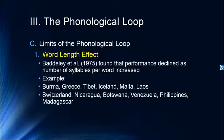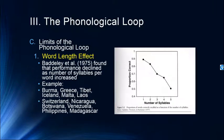Looking at the original research, the proportion correct for items recalled declined pretty dramatically as number of syllables increased. For one-syllable words it's about 90% correct — roughly the same as letters or digits. But when you get to five syllables, performance declines down to 50%. This is a clear indication that the length of the word, particularly the length of the sound of the word, is an important component.